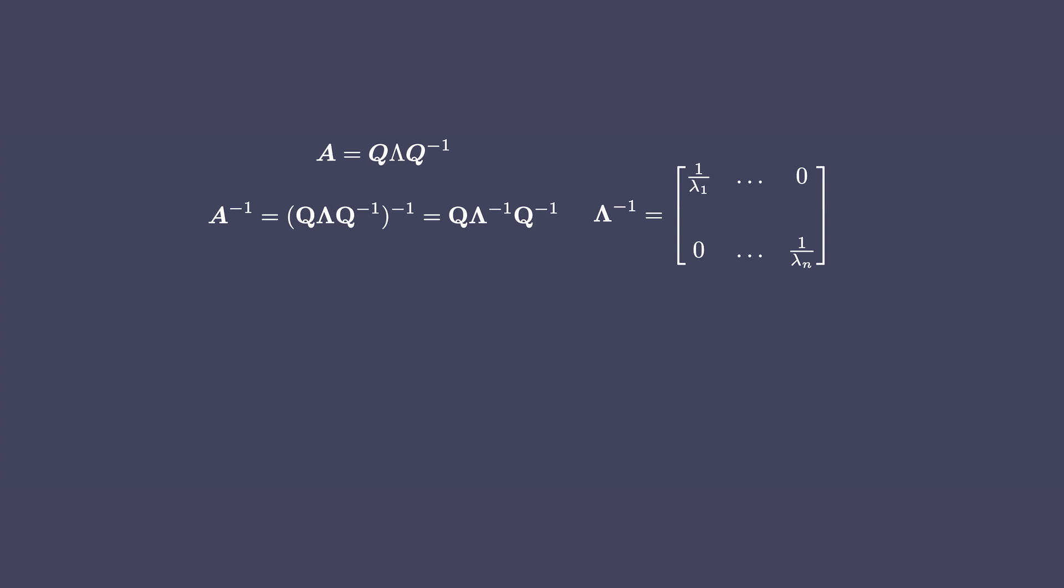Now here is the interesting part. If any of the eigenvalues is 0, then the diagonal lambda is not invertible, since its determinant is 0. And by consequence, A is also not invertible.